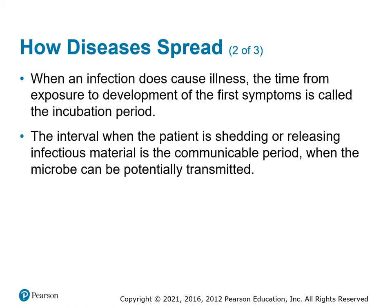Every infectious disease has an incubation period. Every communicable disease has a communicable period. When an infection does cause illness, the time from exposure to the development of the first symptoms is called the incubation period. Depending on how long it takes to incubate will determine how long somebody will be symptom free, and it could range from three days to 14 days. The interval when the patient is shedding or releasing infectious material is the communicable period — when the microbe can potentially be transmitted.